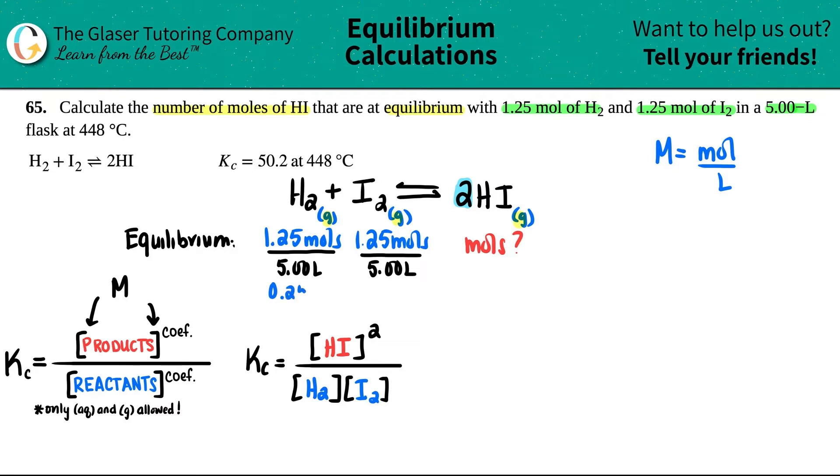So tricky, tricky. Just remember, always, if you're using KC values, only molarity is allowed in here. Okay, so let's see. They gave us the KC value. They told us that it was 50.2. So 50.2. We don't know anything about this guy, HI. So maybe I'll label this as the X. But now I know that H2 is 0.25 molarity. And then I2 is also the same thing, 0.25 molarity. So let's plug in our numbers.